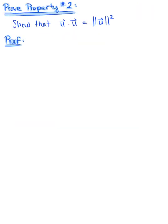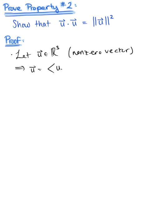Let's look at the proof for property number two together. We want to show that the dot product of a vector with itself is equal to the magnitude of that vector squared. I'm going to go through the proof in R3, but keep in mind that this holds true in Rn as well. Let's let vector u be some non-zero vector in R3, defined by the components u₁, u₂, u₃.